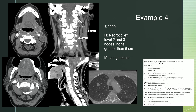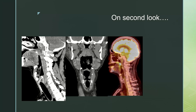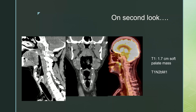With unknown primary cancer, we proceed to PET scan. On second look, we see uptake within the uvula and soft palate — the uvula is actually the primary source of the tumor, measuring approximately 1.7 centimeters in maximum diameter. So our final staging after the PET CT is T1N2BM1.